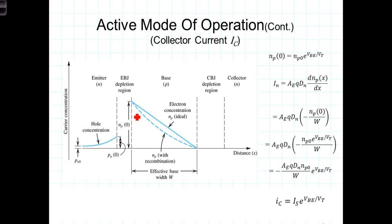N_P is the electron concentration in the base. N_P0 is the concentration at the junction itself — the electron concentration at the base-emitter junction. Because of the reverse bias voltage at the collector junction, there are no electrons at that junction, so the concentration there is zero. The profile is not quite linear due to recombination in the base, but recombination is relatively small because of the small hole concentration and the narrow base width, so we neglect it for this derivation.